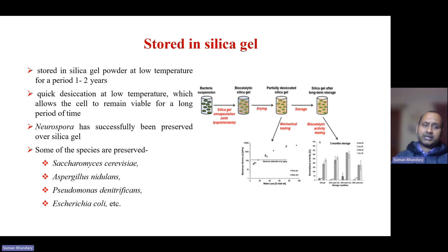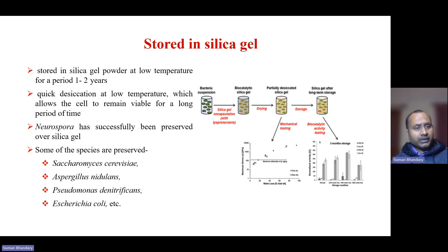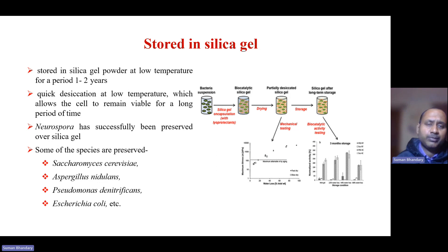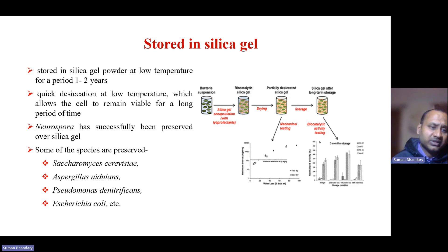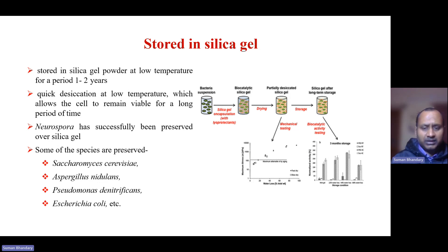Another storage method is storage in silica gel at low temperature, which can preserve cultures for one to two years. First, you have to quickly desiccate at low temperature, which allows the cells to remain viable for a long period of time. Neurospora has been successfully preserved over silica gel. Other species such as Saccharomyces, Aspergillus, Pseudomonas, and Escherichia can also be stored using silica gel for a long time.